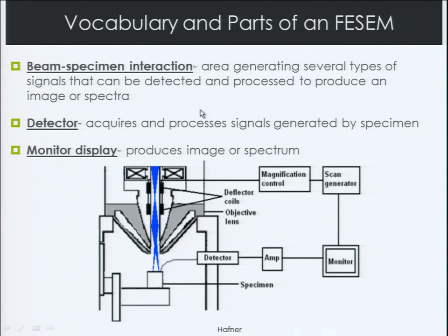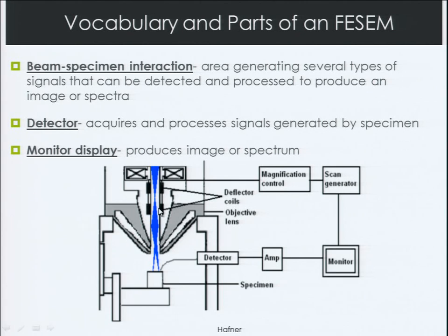Looking at these parts in more detail, the beam-specimen interaction is an area that generates signals which can be detected to produce our image. The detector's job is to acquire and process these signals, and then the monitor shows us what those signals look like. The beam comes down, is rastered by the deflector coils, focused by the objective lens, and a detector picks up the signal. We can amplify it and send it to a monitor to watch what's happening in real time, with a feedback loop between magnification control, focus, the deflector coils, and the objective lens.